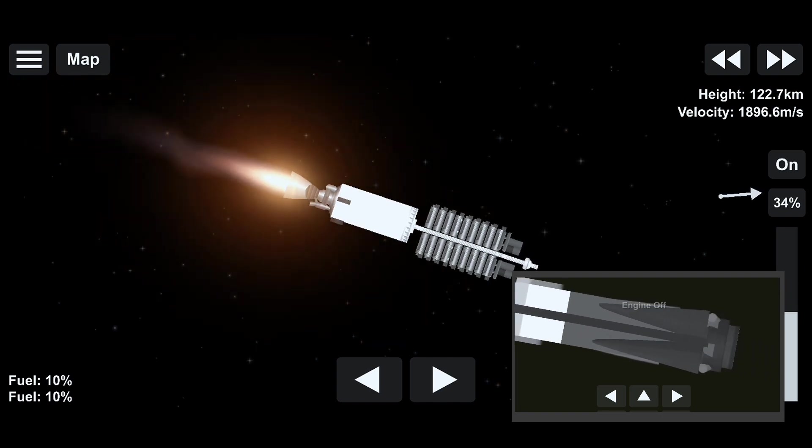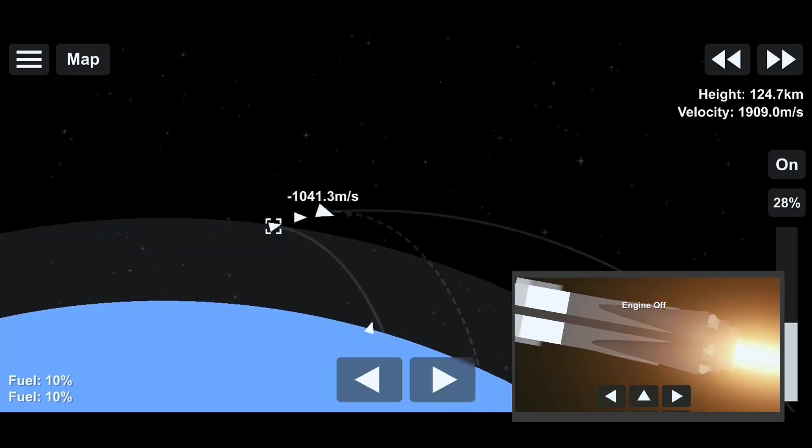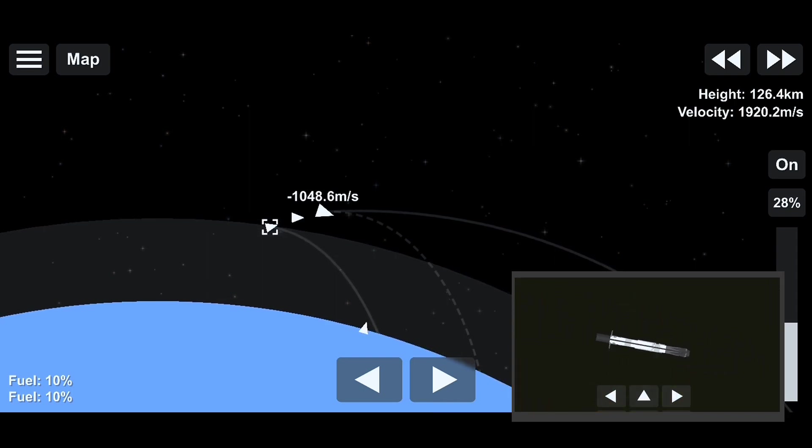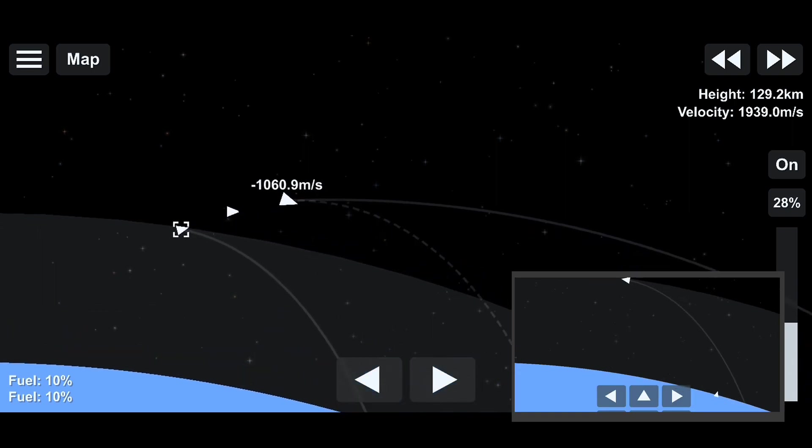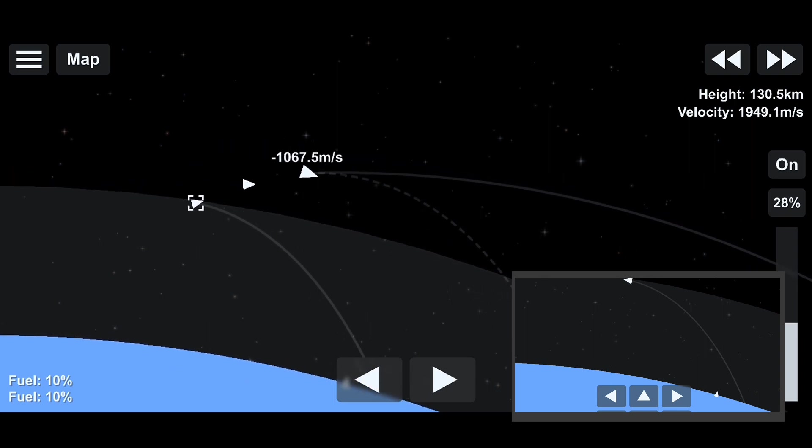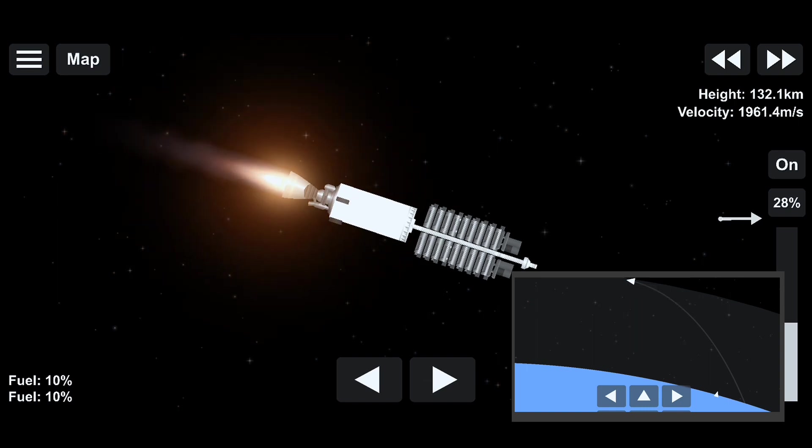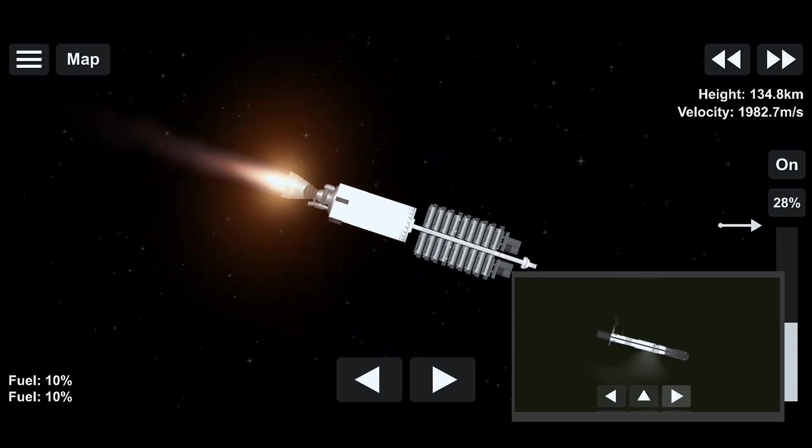While stage two is doing its job there on the right, stage one is headed back home to Earth. You can't quite see it on the video on the left, but it is doing that and it will do this by executing a series of two burns. The first burn is the entry burn where three of the nine M1D engines will light up and slow the stage down as it re-enters the upper part of the Earth's atmosphere. The second burn is the landing burn, and this is a single engine burn that brings the vehicle speed down rapidly in order to land on the drone ship.